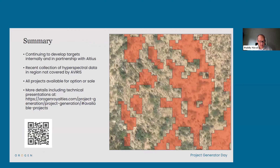Origin's Reno-based technical team are continuing to develop epithermal targets in Nevada in partnership with Altius Minerals. In addition to these targets, an exciting new project is evolving based on the acquisition of new high-resolution spectral data in a remote corner of the western United States not covered by historic AVIRIS. This work has identified several large undrilled alteration cells. We believe demand for these targets will increase as AngloGold Ashanti continues to advance the Silicon-Merlin target with 12 drill rigs on site, and as the full magnitude of the opportunity for world-class epithermal systems in this region becomes more apparent. Origin's portfolio represents early-stage drill-ready targets available for option or sale.